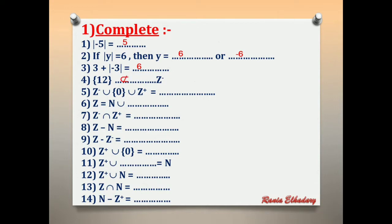Number 5: Z negative union the set of {0} union Z positive. We have negative integers, 0, and positive integers. So we have all integers — the set Z.